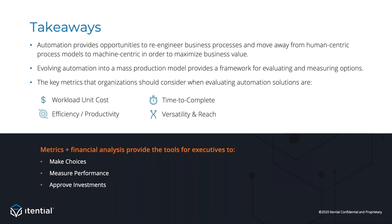In closing, we at Itential believe that automation provides many opportunities to re-engineer business processes that can maximize business value. By thinking about automation as a mass production model — like a factory — teams can incorporate metrics that matter for mass production environments. We believe those key metrics are workload unit cost, efficiency and productivity, time to complete, and versatility and reach. By using the metrics along with financial analysis, automation teams can provide executive leadership with a robust set of data to make better investment decisions and to more effectively manage automation initiatives to maximize the benefits to the business. Thanks for your time today. Next, we'll spend a few minutes answering questions from the chat.